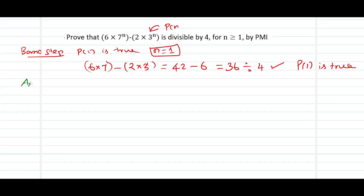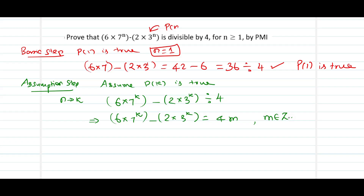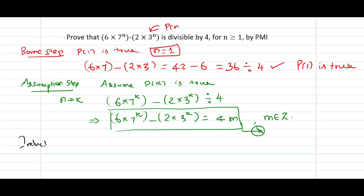The next step is the assumption step. We assume that p of k is true — that is, when we replace n with k, we have 6 into 7 to the power of k minus 2 into 3 to the power of k is divisible by 4. This leads to 6 into 7 power k minus 2 into 3 power k being expressed as 4 times m, where m belongs to the set of integers. We will use this assumption to prove the induction step, replacing k with k plus 1 to prove p of k plus 1 is true.